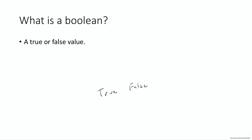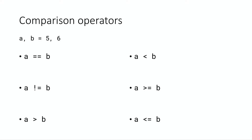What we can actually do is construct expressions that will give us a Boolean result. Let's take a look at some of the very basic ones — the comparison operators. Imagine I have two variables, a and b, where a is equal to 5 and b is equal to 6. That's the same as saying a equals 5 and b equals 6 on separate lines; those two snippets of code are equivalent.